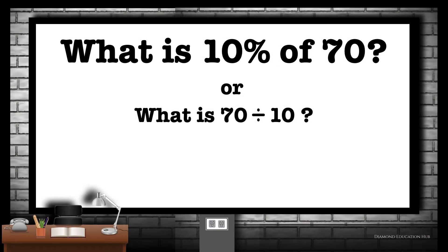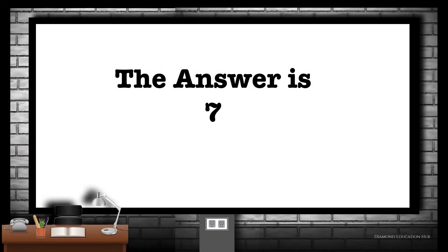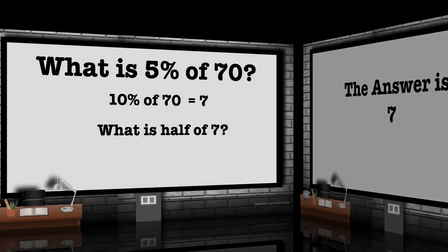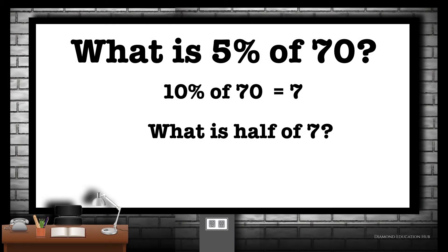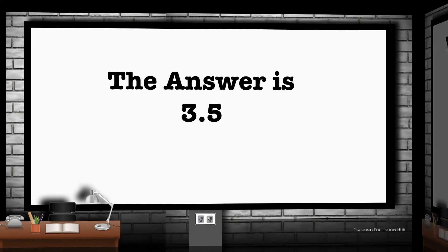What is 10% of 70, or what is 70 divided by 10? The answer is 7. What is 5% of 70? We already know that 10% of 70 is 7. What is half of 7? The answer is 3.5.